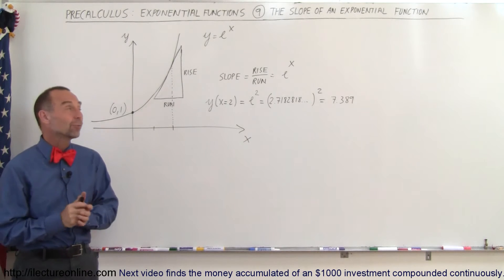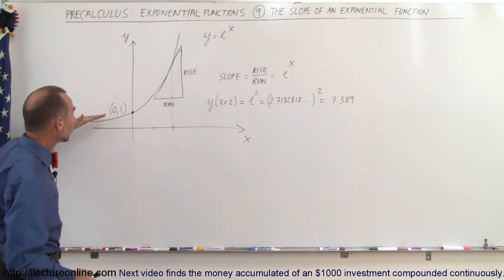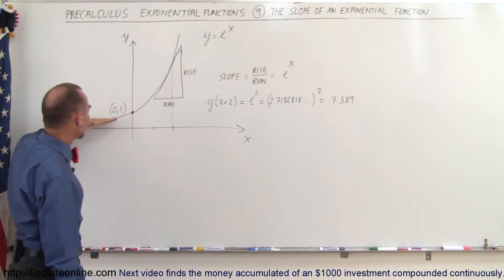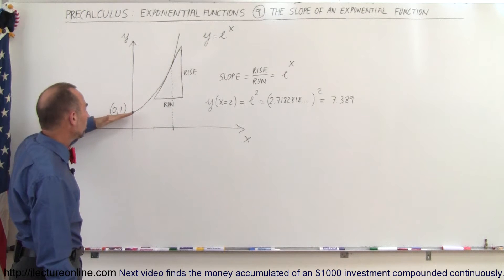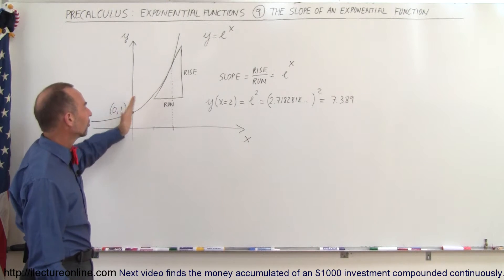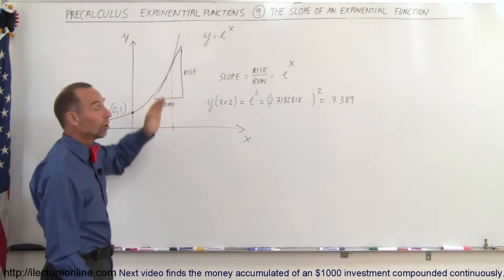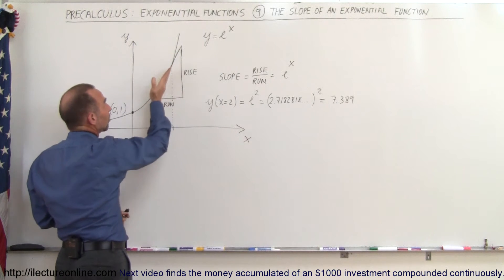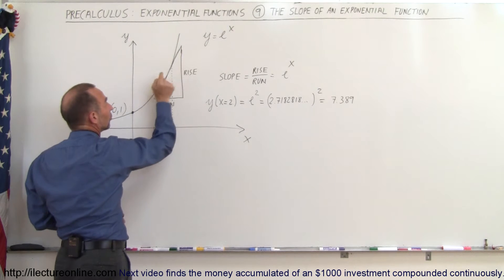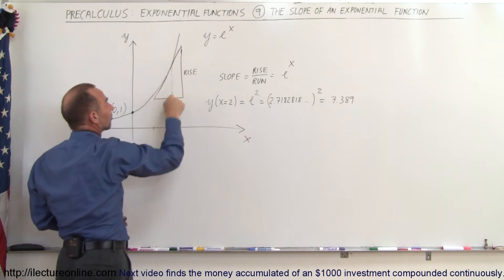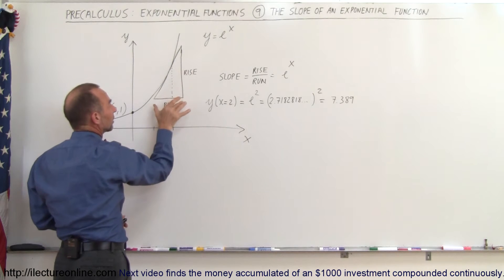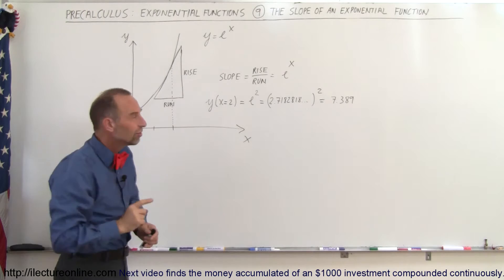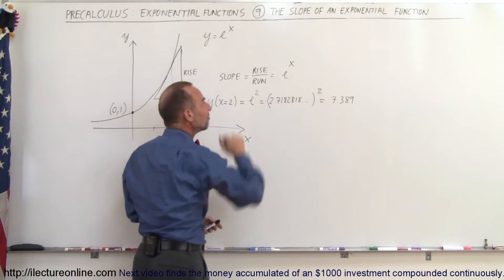What does that actually mean? Well, here we have a graphical representation of the function y equals e to the x. Notice that the slope is not very large, but the slope continues to get larger as the value of x gets larger. To find the slope at any point along the curve, you simply draw a tangent line to the function, calculate the rise and the run, and the slope — the ratio of rise to run — is always equal to e to the x for any value of x.